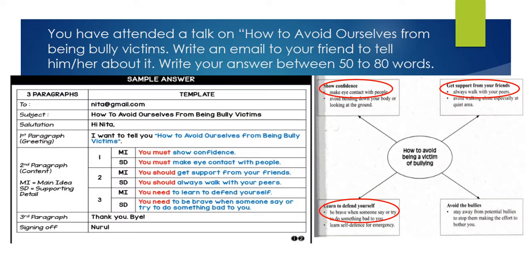You have attended a talk on how to avoid yourself from being a bully victim. Write an email to your friend to tell him or her about it. Write your answer between 50 to 80 words. Now, when you write an email, you only need to have at least one paragraph.